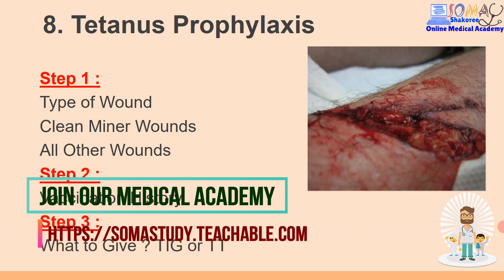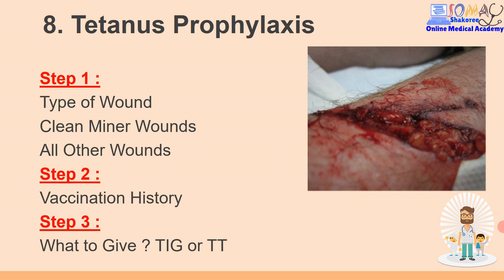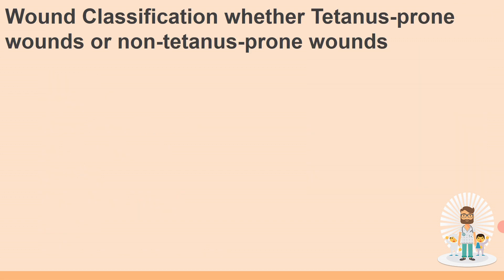Step three: you have to know what to give. We have two types - we have tetanus immunoglobulin and we have tetanus toxoid. Sometimes the tetanus immunoglobulin is available, sometimes the tetanus toxoid is available, sometimes both are not available, sometimes both are available. We will discuss the scientific way of what to give.